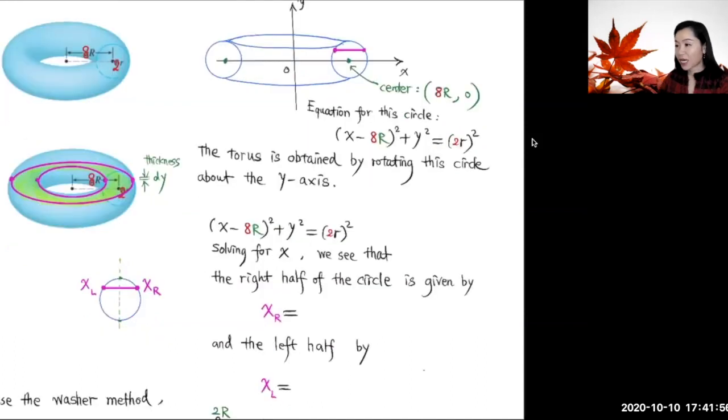Now we can find the volume for this torus by slicing it up horizontally. So each slice, this is one particular slice, it is a washer.